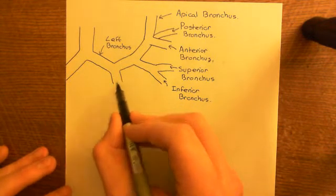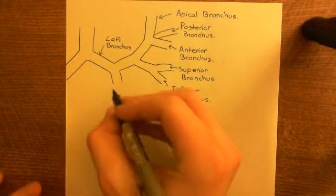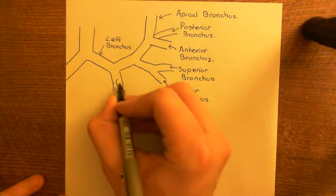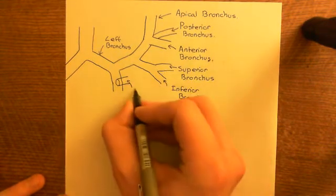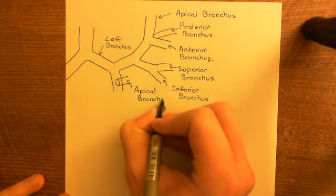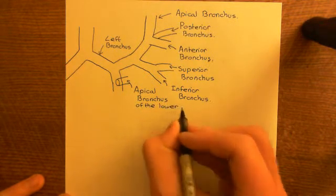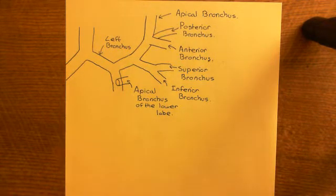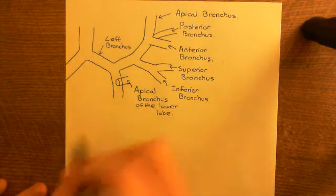Now let's turn our attention to the division supplying the lower lobe. Just like on the right side, the first thing that happens is a small division comes off from behind — this supplies the top of the lower lobe and is known as the apical bronchus. Because the name clashes with others, we need to say apical bronchus of the lower lobe of the left lung. Then the rest of this bronchus supplying the lower lobe is going to divide into four, going in all directions.